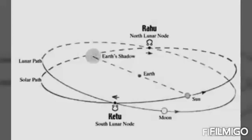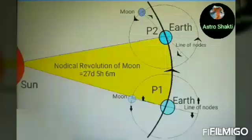There are two nodes of the lunar orbit due to its tilt from the ecliptic. They are called the ascending and the descending nodes. For eclipses to occur, the Moon must be at one of its nodes at the time of New Moon or Full Moon.